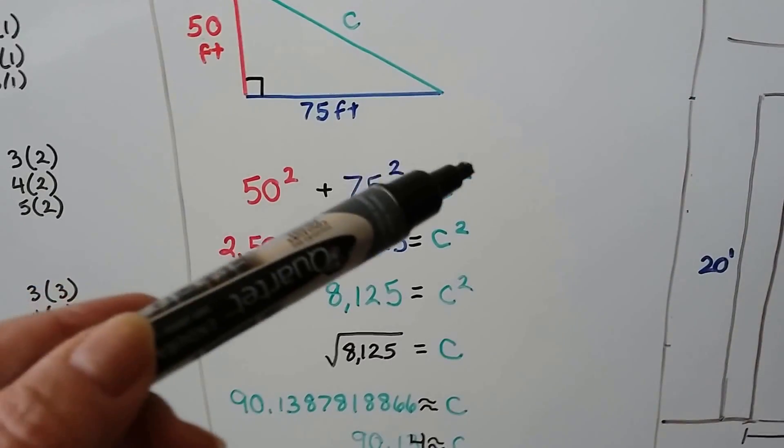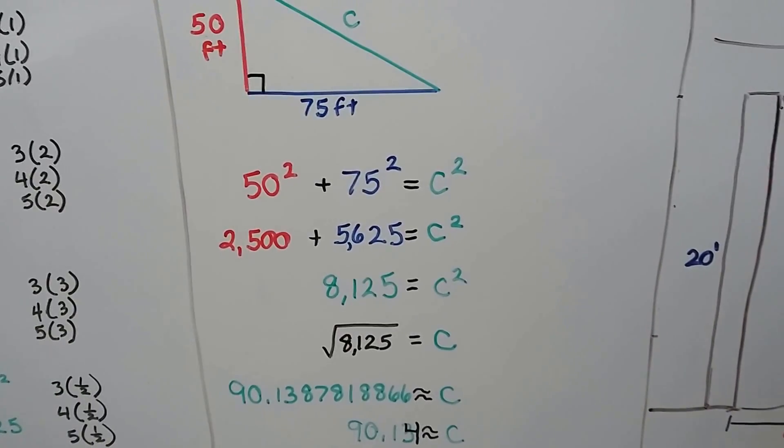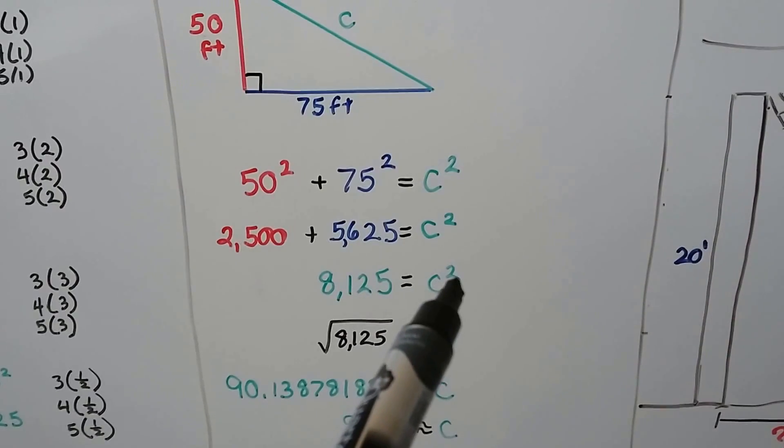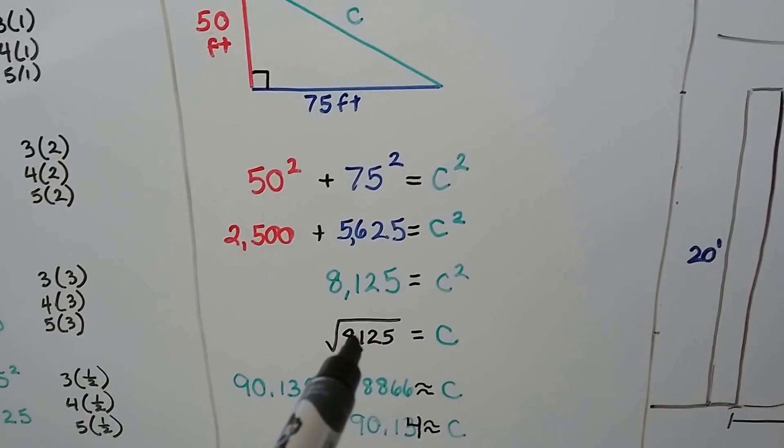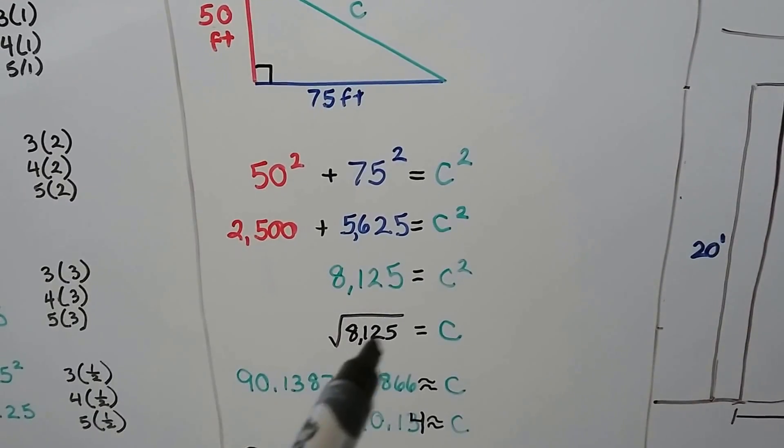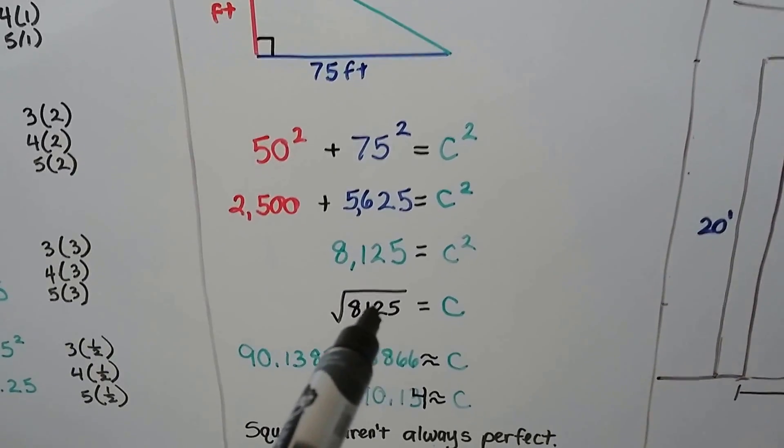And that'll equal the hypotenuse squared. So, remember, because these are squared, the c's got to be squared. To remove that little two exponent, we put the radical sign around the 8,125, and we find a number that, when multiplied to itself, will equal this.